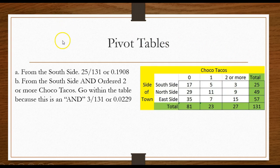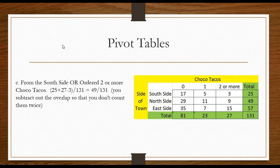You have to be careful with these. Now what about the probability of the south side OR ordered two or more tacos? Now the OR with a pivot table is really easy. I'll look at the total of the south side, 25. The total of the two or more is 27.